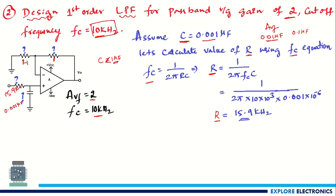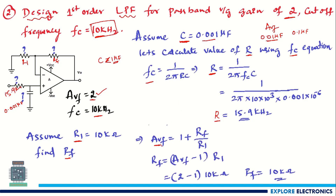Now calculate R1 and Rf. The gain expression is Avf = 1 + Rf/R1, but both components are unknown. So assume R1 = 10 kΩ. Substituting Avf = 2 into the expression: 2 = 1 + Rf/10 kΩ, which gives Rf = 10 kΩ.